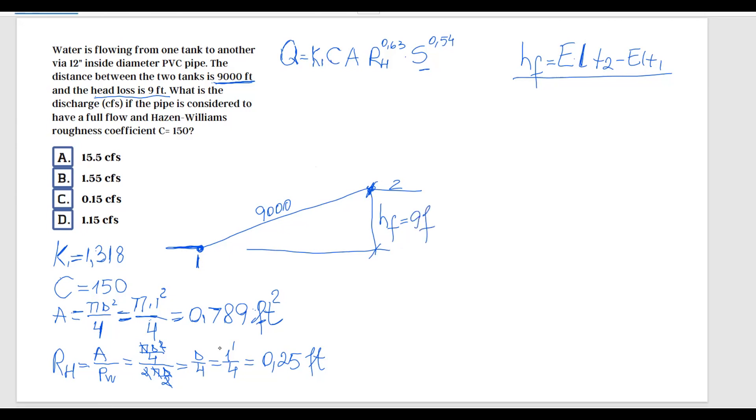So now based on this information given in the problem, we can actually figure out what the slope is because we know the slope is going to be equal to the head loss divided by the length: 9 feet divided by 9,000 feet.